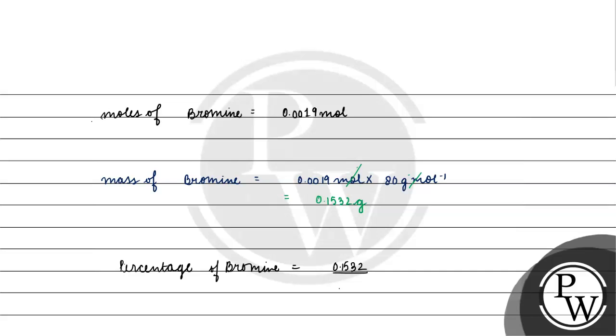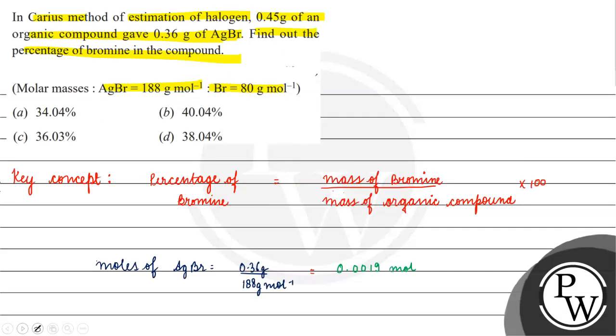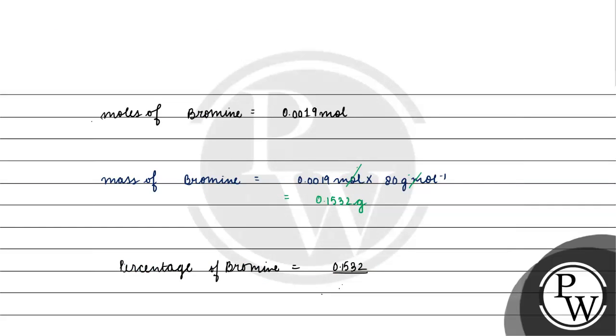Mass of bromine by mass of organic compound, 0.45 into 100. How much will it be? 34.04 percent.